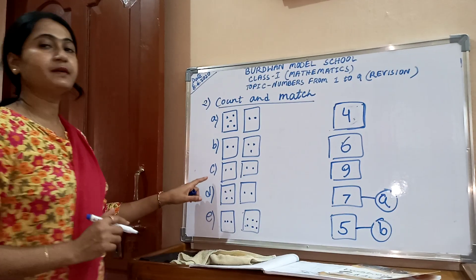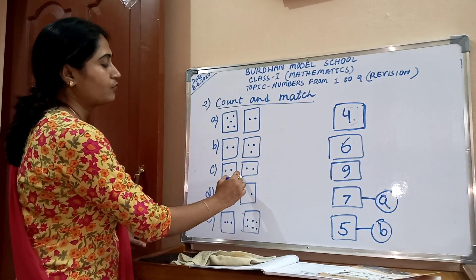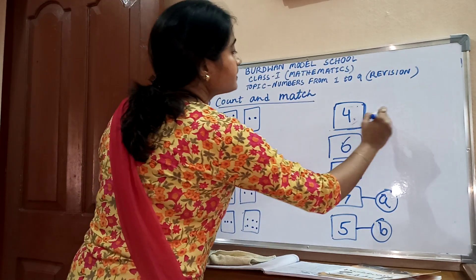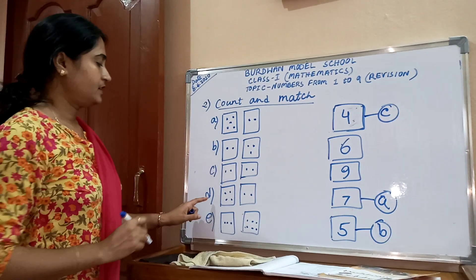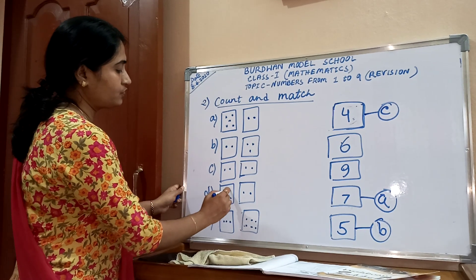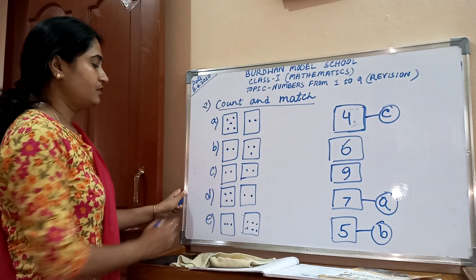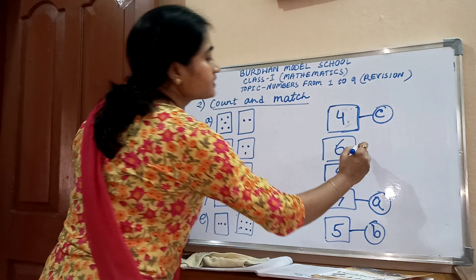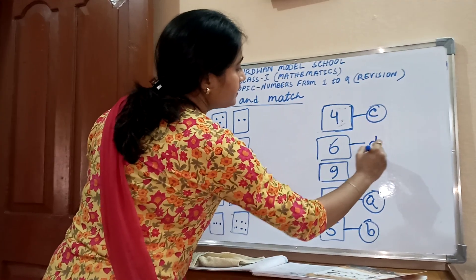Number C: count the dots — one, two, three, four. Four dots. Where is 4? Here — this is number C. Number D: count the dots — one, two, three, four, five, six. Six dots. Where is 6? This is number D.